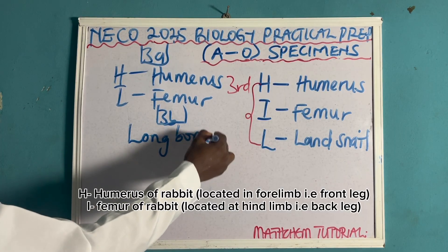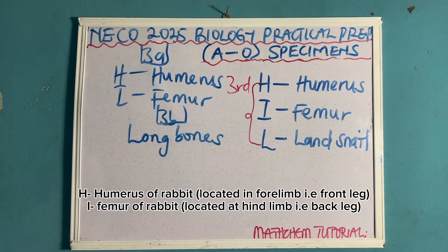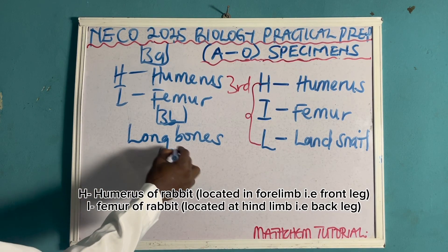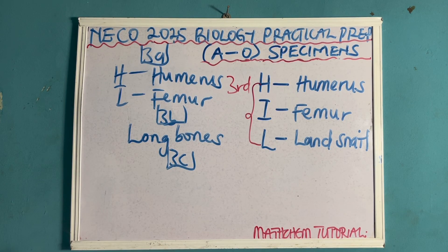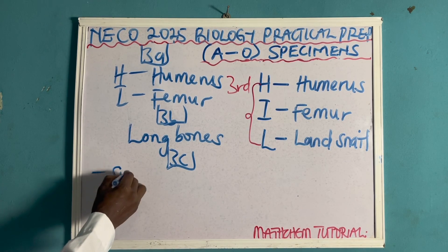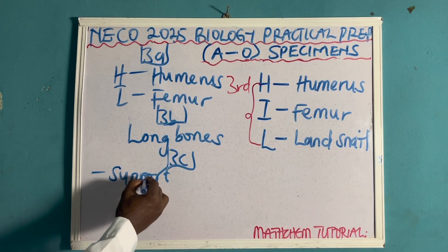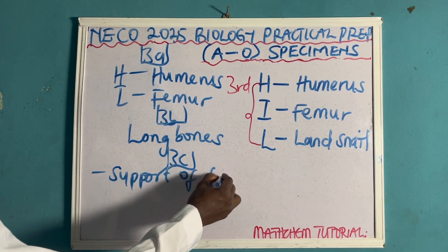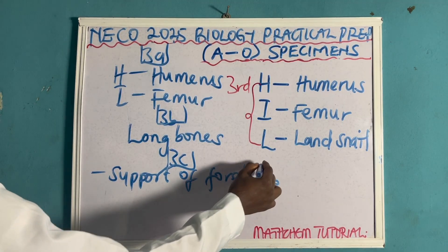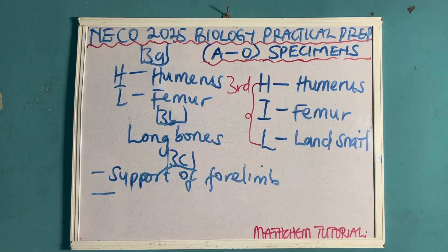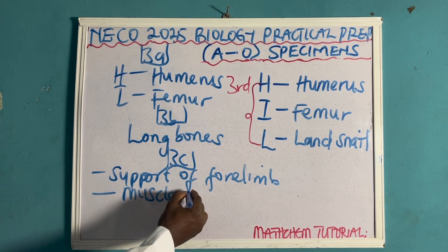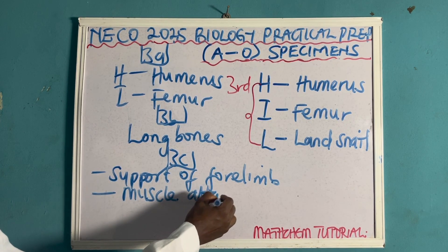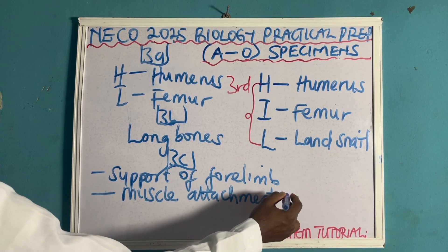Question 3C: they can ask you to name two functions of specimen H, which is the humerus. The first function is support — it supports the forelimbs. The second function is muscle attachment for movements.